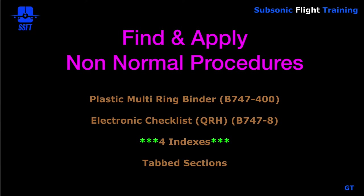The 747-400 has what's called a paper QRH. It's a plastic multi-ring binder consisting of seven rings along with a plastic cover and plastic back, and it's comprised of tabs in which you can easily find the indexes and the contents of the non-normal procedures.